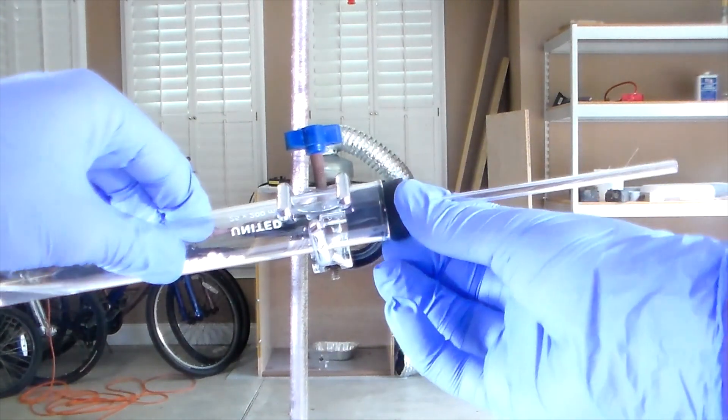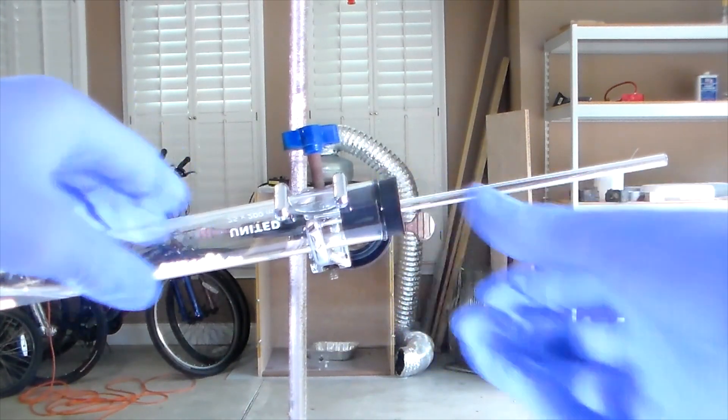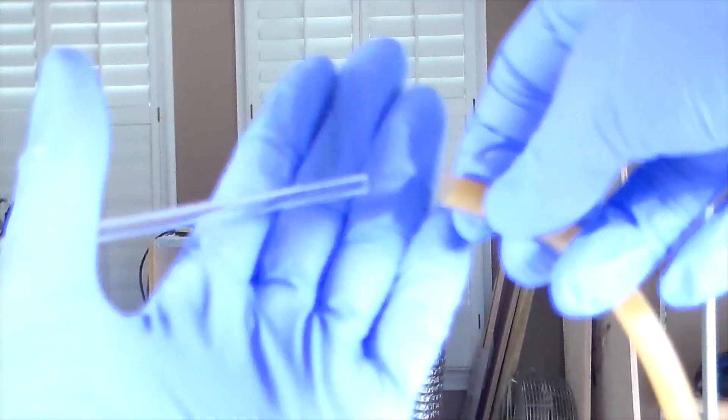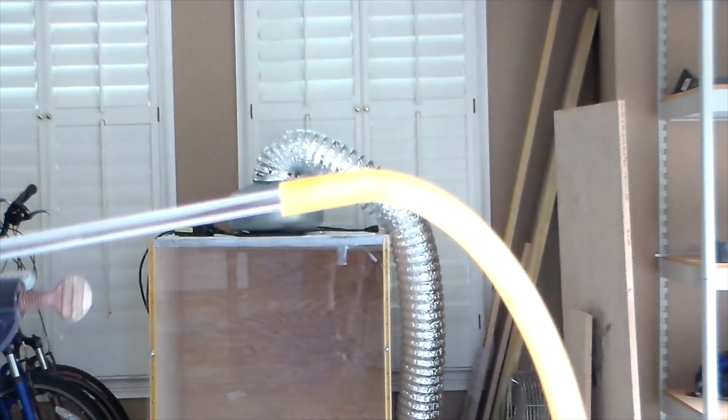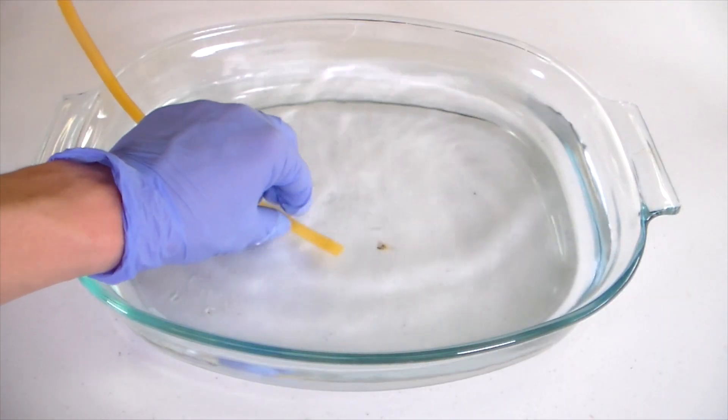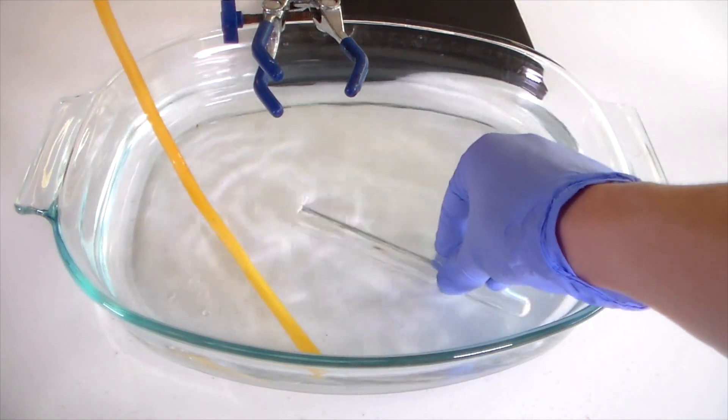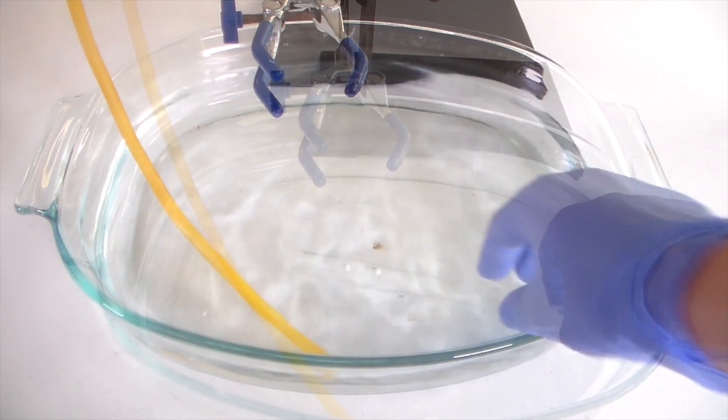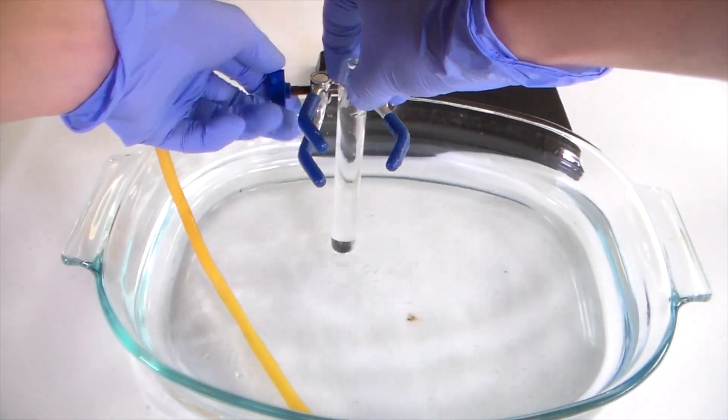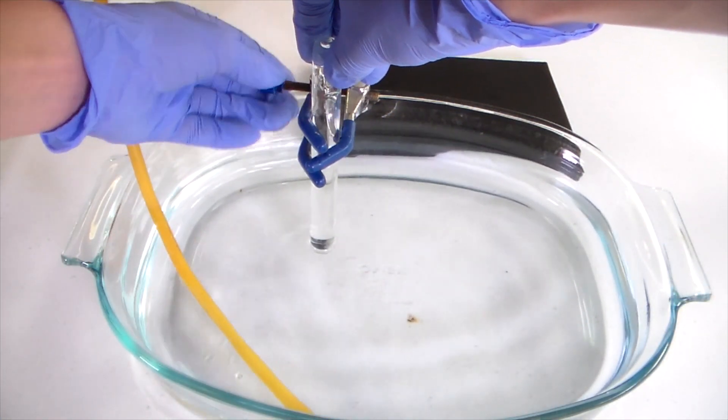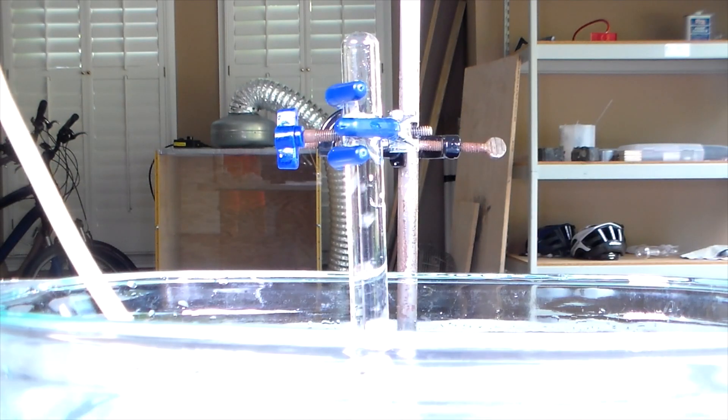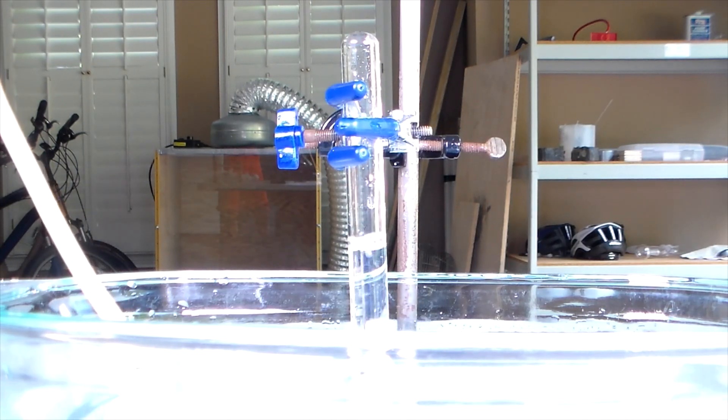Next, add a one-hole rubber stopper with a glass tube in it to the test tube. Attach a plastic tube to this glass tube. Insert the other end of the plastic tube into a tray full of water. Now you will need to fill a test tube with water and insert it into the water tray upside down, securing it in place with a clamp. Make sure to leave some space at the bottom. This will be used to collect the ethene gas by water displacement.